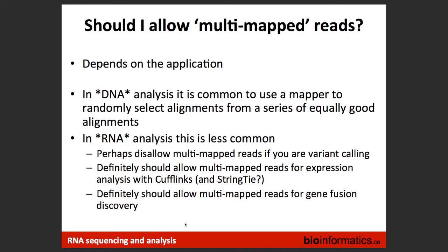Should you allow multi-mapped reads? In DNA, a read can map to multiple places in the genome with equally good scores, and aligners can randomly pick one. But with RNA, picking a random read might affect the dynamic range of your expression. If you're doing variant calling, disallow multiple reads. If you're doing expression estimation, allow multiple reads. Many alignment parameters depend on what you're doing downstream — expression estimation or variant calling — and things will change accordingly.